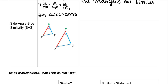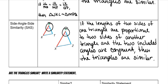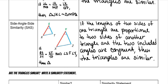Side-angle-side similarity says: if the lengths of two sides of one triangle are proportional to the corresponding two sides of another triangle, and the two included angles are congruent, then the triangles are similar. So if RS over XY equals ST over YZ, and angle S is congruent to angle Y, then triangle RST is similar to triangle XYZ.